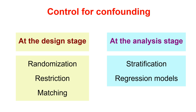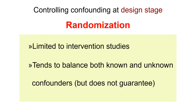Randomization is one of the best ways of controlling for a potential confounder at the design stage, but it is limited to intervention studies. It tends to balance both known and unknown confounders, but it does not guarantee this.